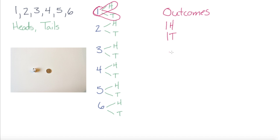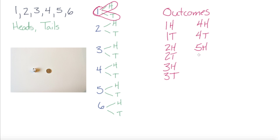Same with two — two heads or two tails. Three and heads, or three and tails. Four and heads, and four and tails. Five and heads, five tails. And finally, six and we could toss heads, or six and we could toss tails.